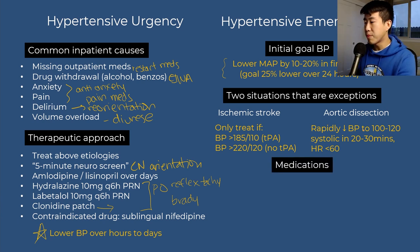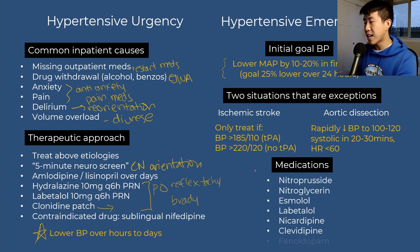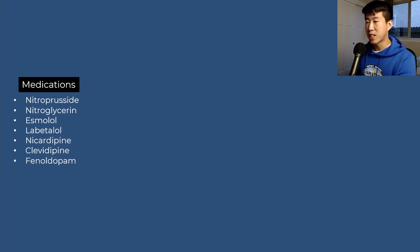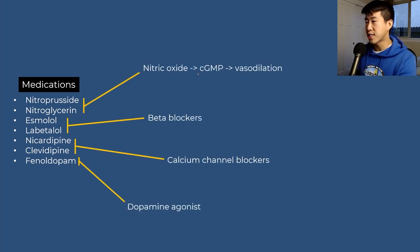Next, let's go over medications used for hypertensive emergency. These include nitroprusside, nitroglycerin, esmolol, labetalol, nicardipine, clevidipine, and fenoldopam. Nitroprusside and nitroglycerin increase nitric oxide levels, releasing cyclic GMP and causing vasodilation. Esmolol and labetalol are beta blockers; nicardipine and clevidipine are calcium channel blockers; and fenoldopam is a dopamine agonist.